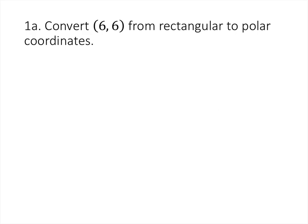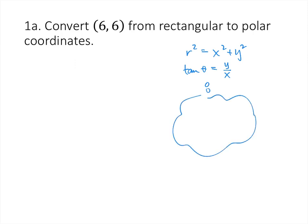For these first few problems, we're converting from rectangular to polar coordinates. Remember that we have a couple of formulas that relate r and theta to x and y. The formulas are that r squared equals x squared plus y squared, and that the tangent of theta equals y over x. We're tempted to solve those equations for r and theta — saying r equals the square root of x squared plus y squared, and theta equals the inverse tangent of y over x. But as we saw in class, that only works in quadrants 1 and 4.